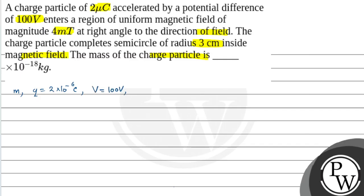After being accelerated from the potential difference, let its velocity be v. There is a magnetic field which is at right angle with the velocity of the charged particle. Let us say that this magnetic field is into the plane and velocity is coming in the plane.